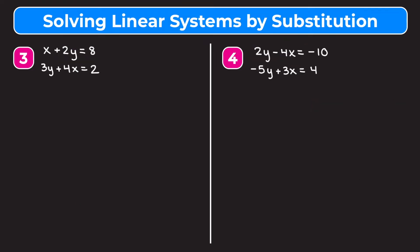For example 3 we have x plus 2y equals 8 and 3y plus 4x equals 2. Neither variable is isolated, so we need to start by doing that. Looking at the first equation, x has no coefficient, so it's easiest to isolate. We subtract 2y from both sides of x plus 2y equals 8 to get x equals 8 minus 2y.